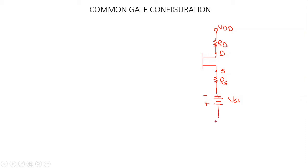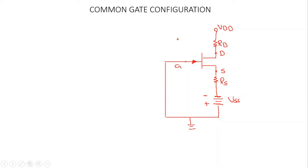We have a ground here and the gate terminal here. Because it's an N-channel junction field effect transistor, the direction of the arrow is as shown. We connect these two and, since we have a common ground, this is now our common gate configuration — the gate is common between drain and source. VDD is at positive potential with respect to ground, VSS is at negative potential, and this is going to be our VGS.